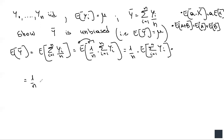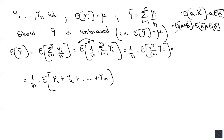So we have one over n times the expected value of y1 plus y2 plus y3 all the way up to yn. We apply the second property of the expected value: the expected value of the whole sum is just the sum of the expected values — the expected value of y1 plus the expected value of y2 plus the expected value of y3 all the way up to the expected value of yn.